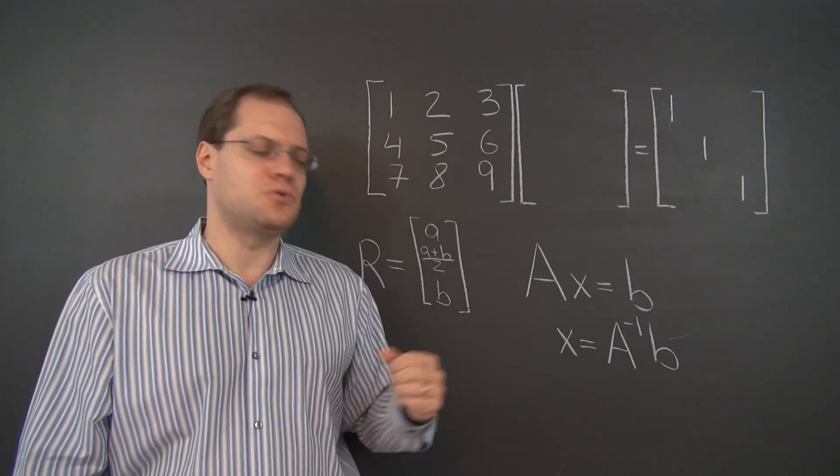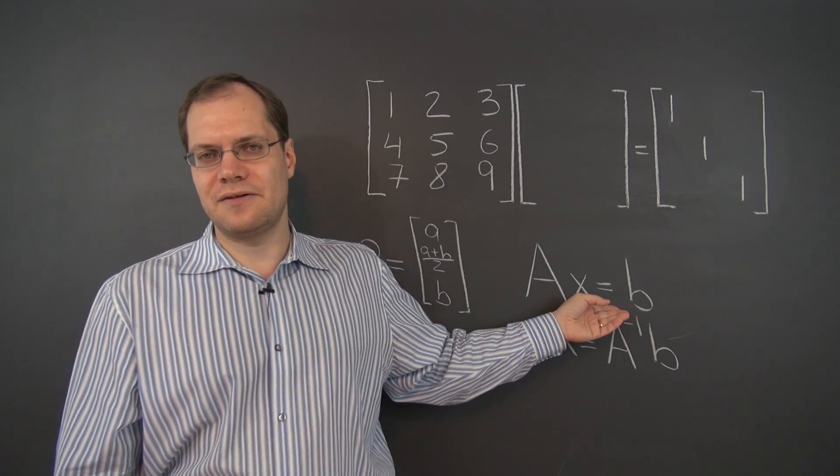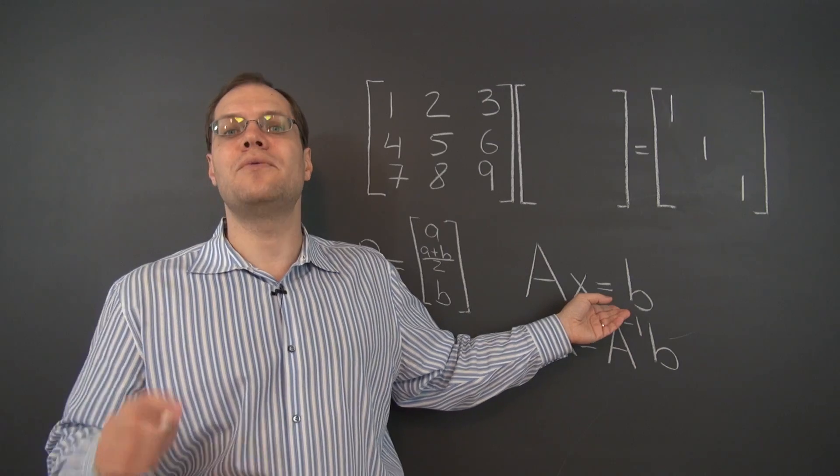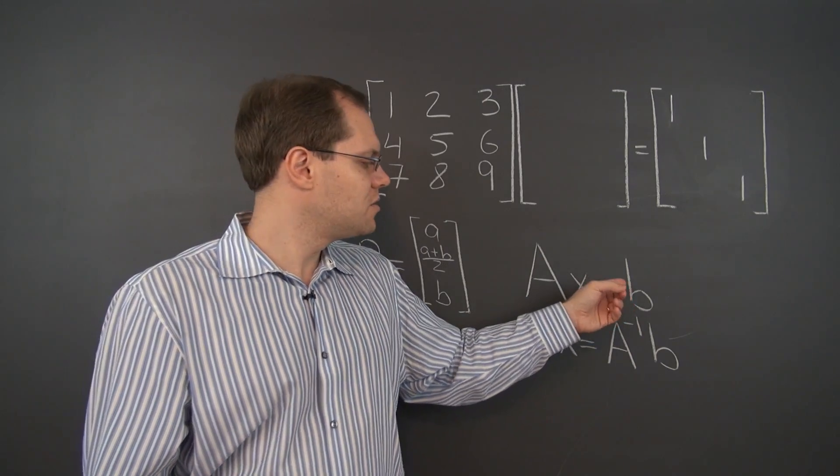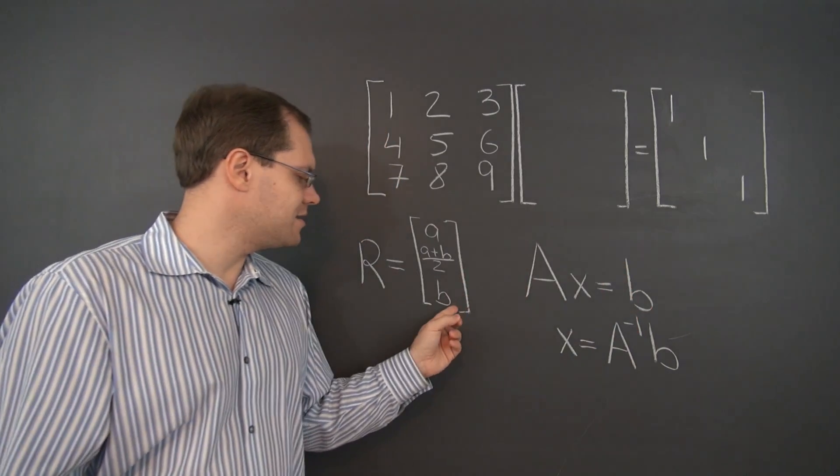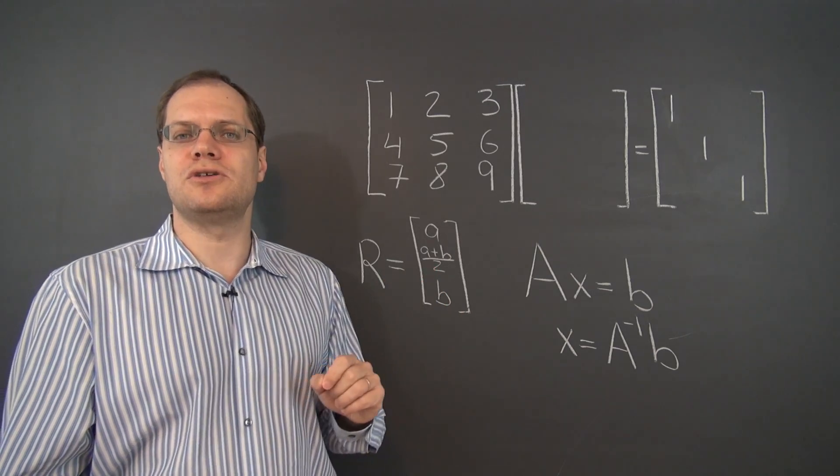Number one, the implication would be that this system always has a solution. And we know that's not the case, because when B is not in this column space, there are no solutions.